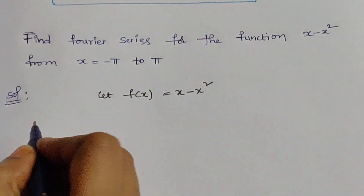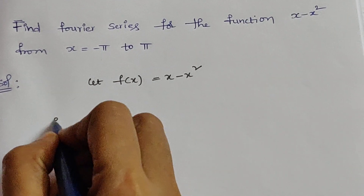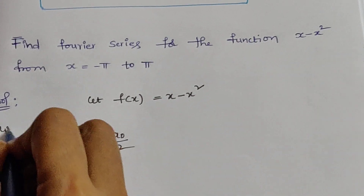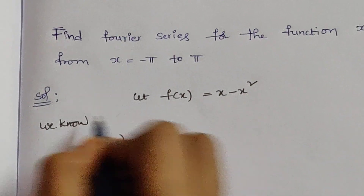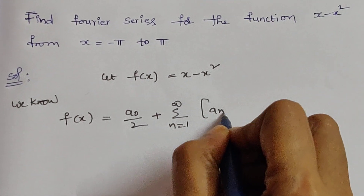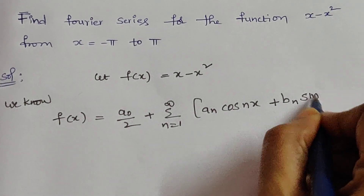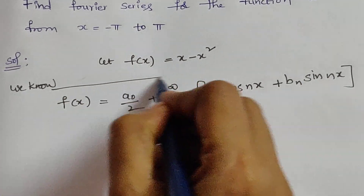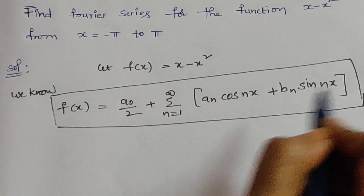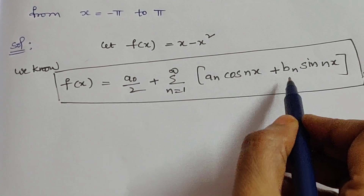We know the Fourier series for the function f of x is equal to a naught by 2 plus sigma n equal to 1 to infinity, a n cos nx plus b n sin nx. This is the Fourier series expansion of f of x. Here a naught, a n, and b n are Fourier coefficients we need to determine.